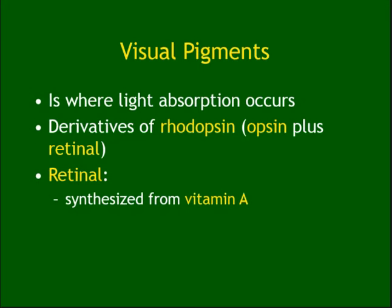Rhodopsin is what gives us the visual pigment — it is opsin plus retinol. Retinol comes from vitamin A. Visual pigments absorb light and are derived from rhodopsin. So rhodopsin = opsin + retinol; retinol = vitamin A. If you don't get enough vitamin A, you get night blindness.